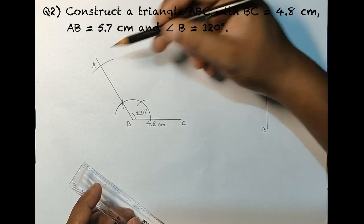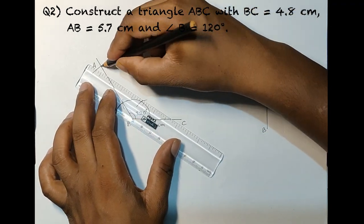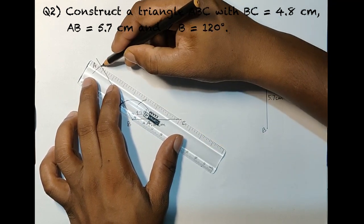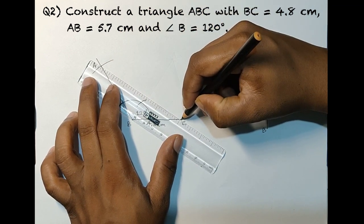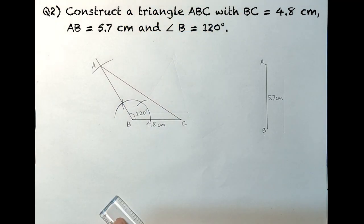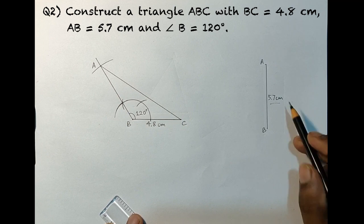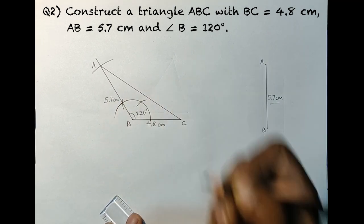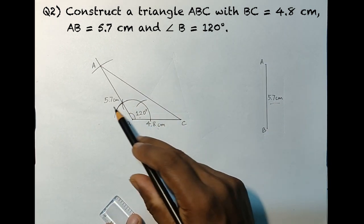Now we are left with the third side. Take from point A and from point C, align them and join the line segment. So here we have the third side. AB is 5.7, so write down 5.7 centimeters. And now we are done with the triangle with an angle and two sides.